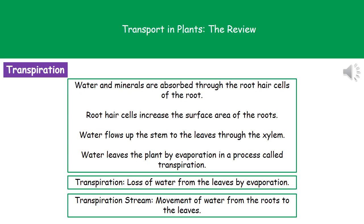Thinking about the process of transpiration, we're talking about the loss of water from the leaves by evaporation. Sometimes you'll be asked to write the definition for transpiration, and there are two ways to get your marks. You can either say it's the loss of water from the leaves by evaporation, or you can say it's the loss of water vapor from the leaves. If you use the phrase 'water vapor,' do not then say 'by evaporation,' because we can't evaporate water vapor — it's already been evaporated.